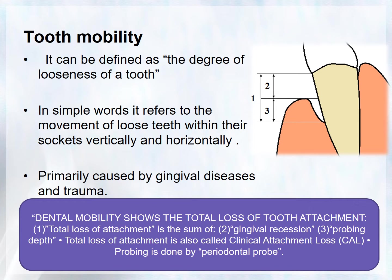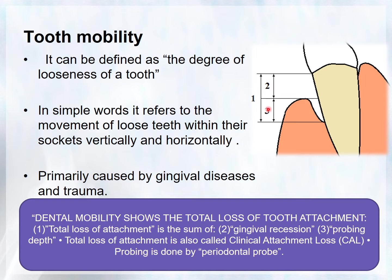What is tooth mobility? It can be defined as the degree of looseness of a tooth. It refers to the movement or loosening of teeth within the sockets, either vertically or horizontally. It is primarily caused by gingival diseases and trauma. Dental mobility shows the total loss of tooth attachment. To measure tooth mobility, it is the sum of gingival recession as well as the probing depth.